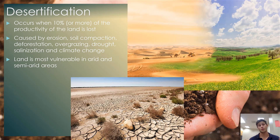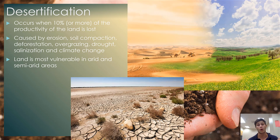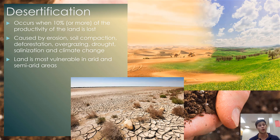All these forms of soil degradation, along with erosion, contribute to desertification — transitioning to a desert — which occurs when 10% or more of the productivity of a land or soil is lost. This is caused by erosion, soil compaction, deforestation, over-grazing, drought, and salinization, all accelerated by climate change. Areas in arid or semi-arid conditions are most vulnerable, and this is where we see the majority of soil degradation on the planet.